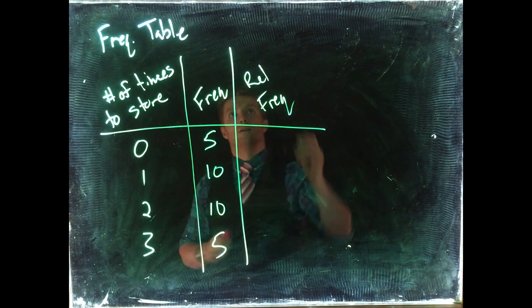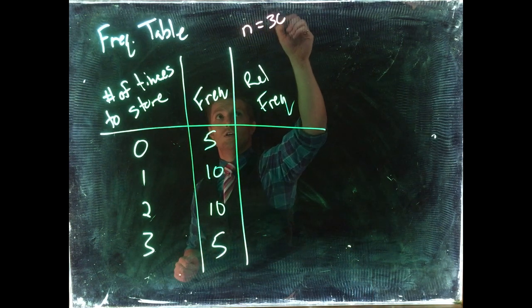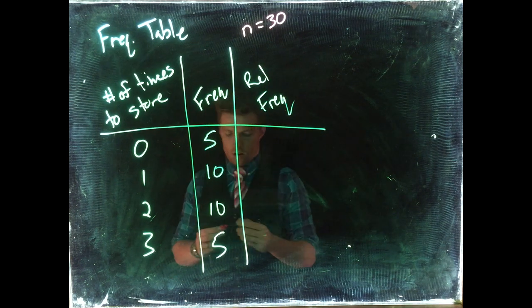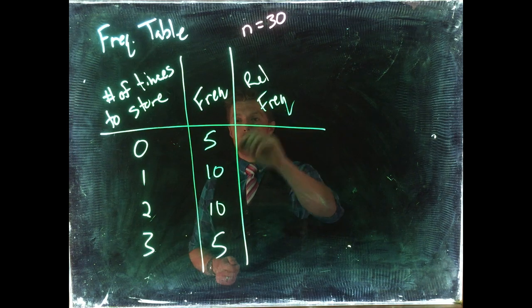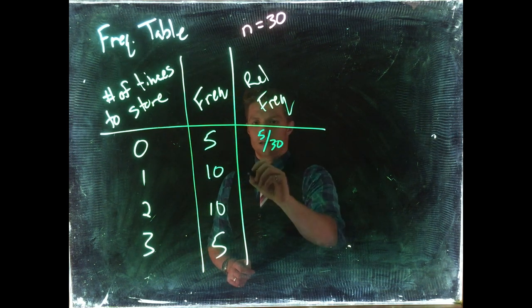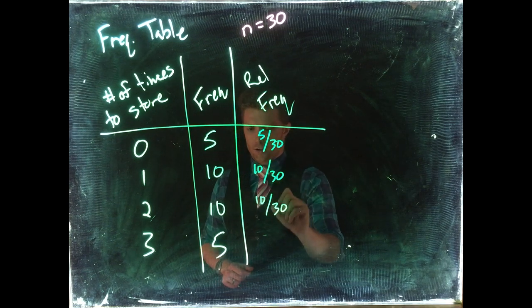The relative frequency then is five divided by 30, ten divided by 30, ten divided by 30, and five divided by 30.